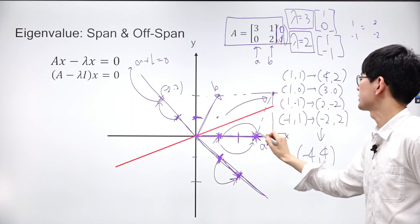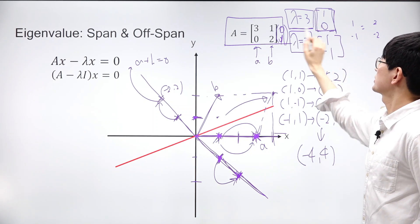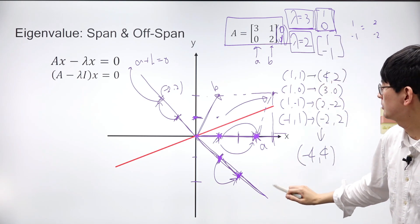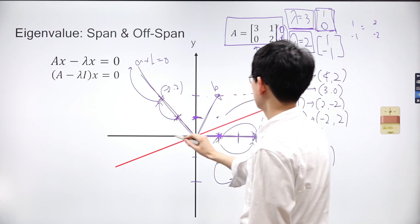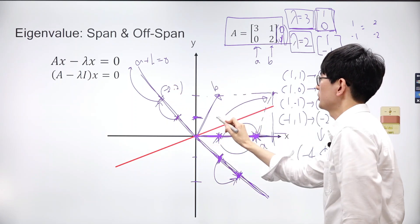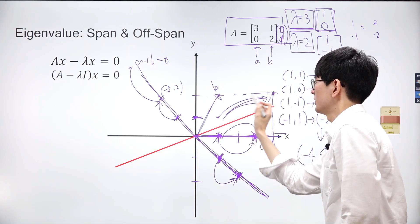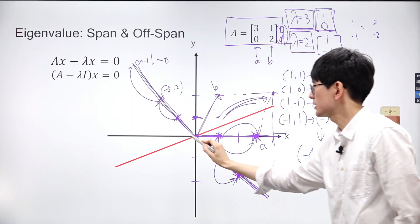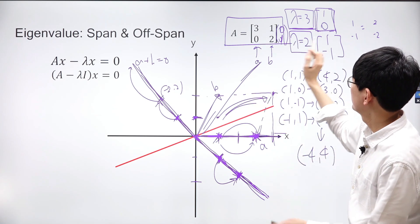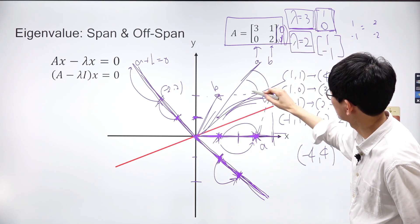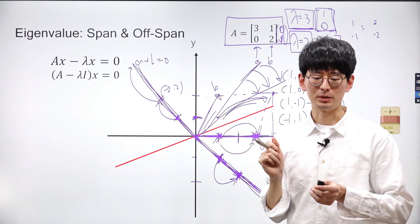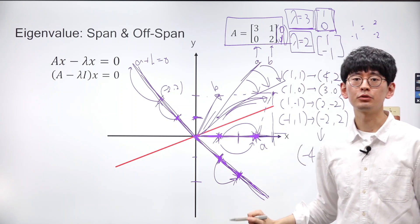Furthermore, eigenvalues determine the extent of this transformation along the line. Since 2 is an eigenvalue for the eigenvector (1, -1), both the coordinates (1, -1) and (-1, 1) have been transformed by a factor of 2 along this line. Another set of coordinates (-2, 2) on the line is shifted to (-4, 4) by a factor of 2. Conversely, coordinates (1, 0) have been transformed by a factor of 3, as the corresponding eigenvalue is 3. These explanations provide a geometric insight into eigenvalues and eigenvectors. Let's explore why these lines spanned by each corresponding eigenvector are crucial.